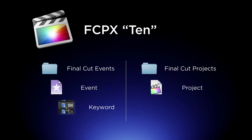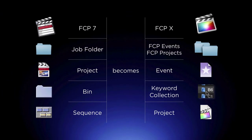To understand what these words mean, the best thing to do is to compare them to Final Cut 7. In Final Cut 7 you had a Job folder, but in Final Cut 10 you have a Final Cut Events folder and a Projects folder. In Final Cut 7 you had a Project, and in Final Cut 10 you have an Event.